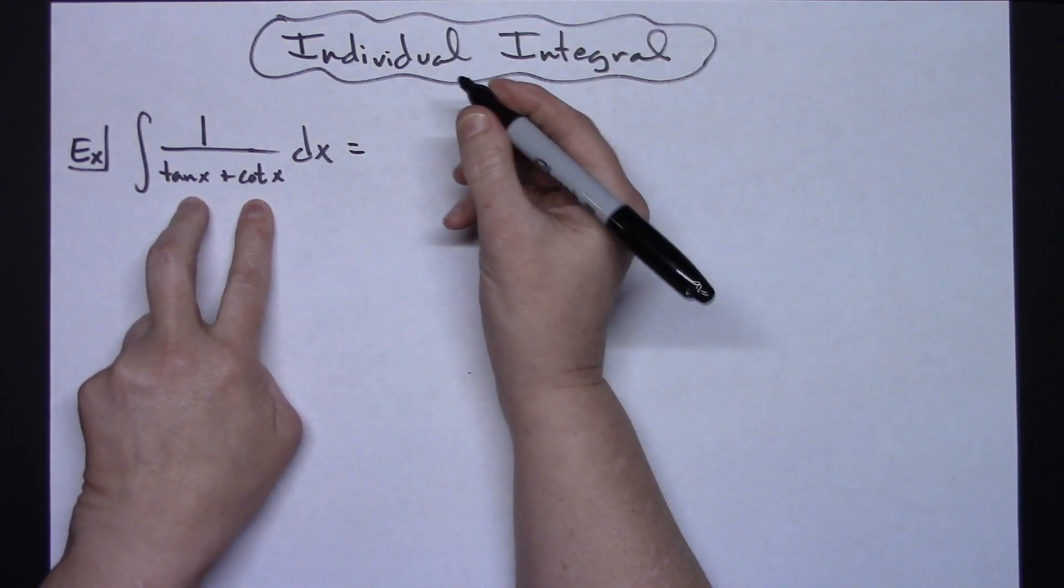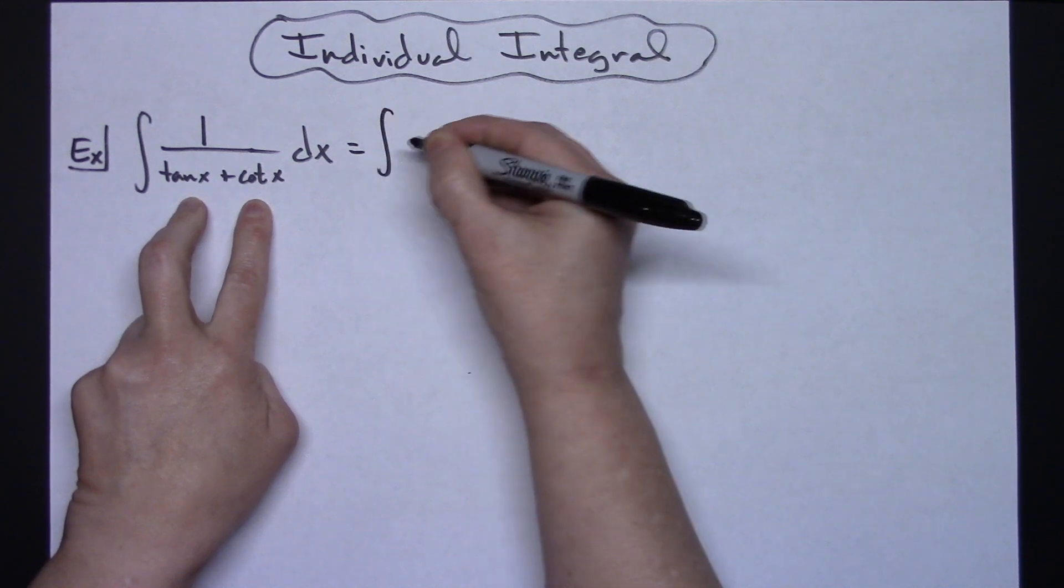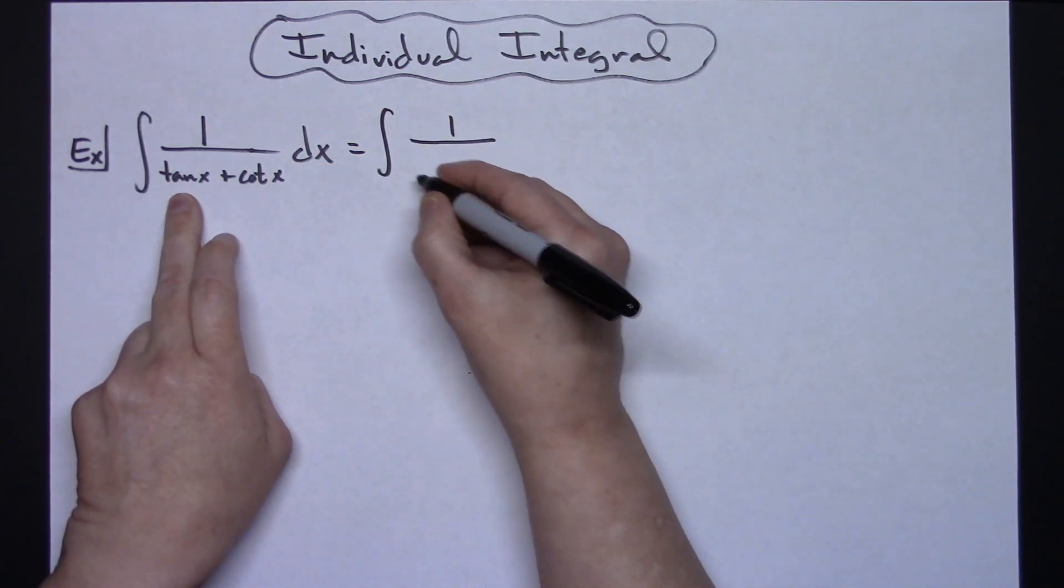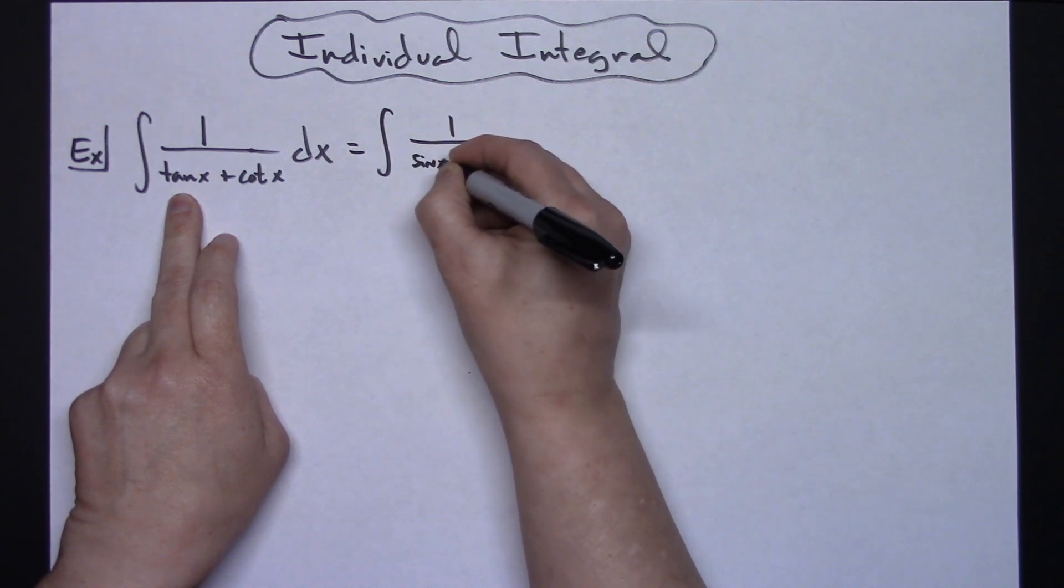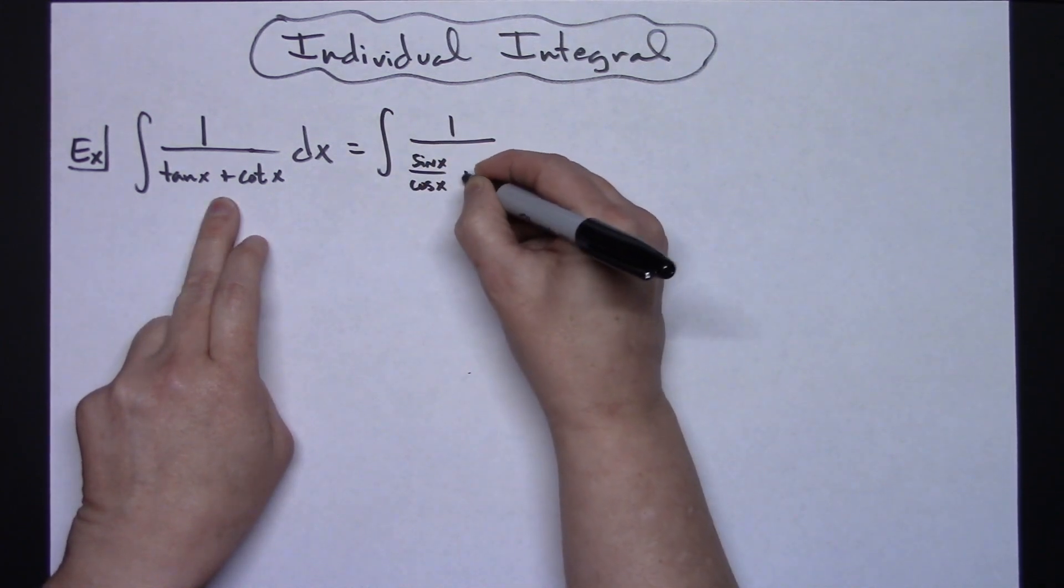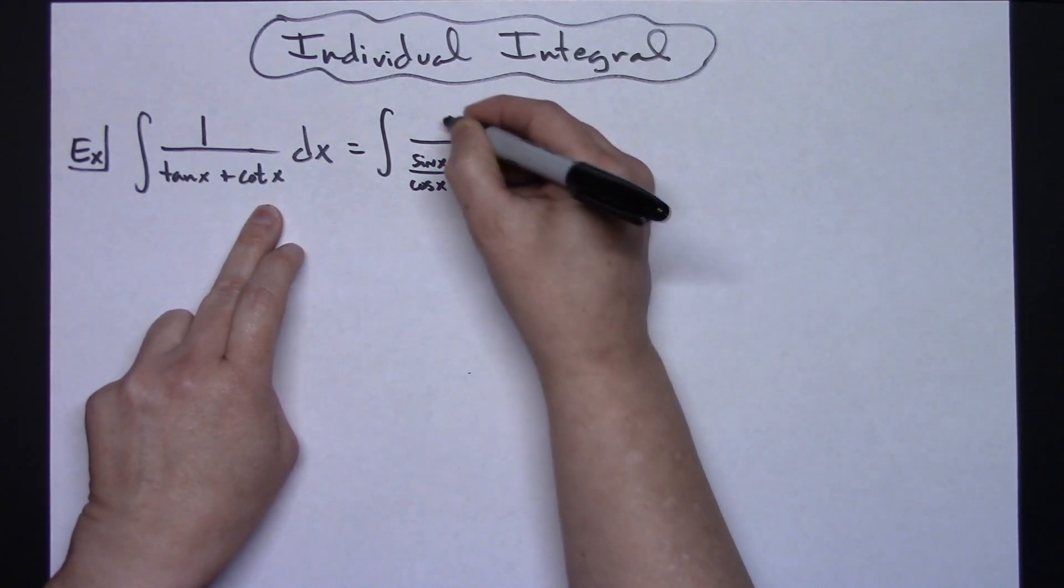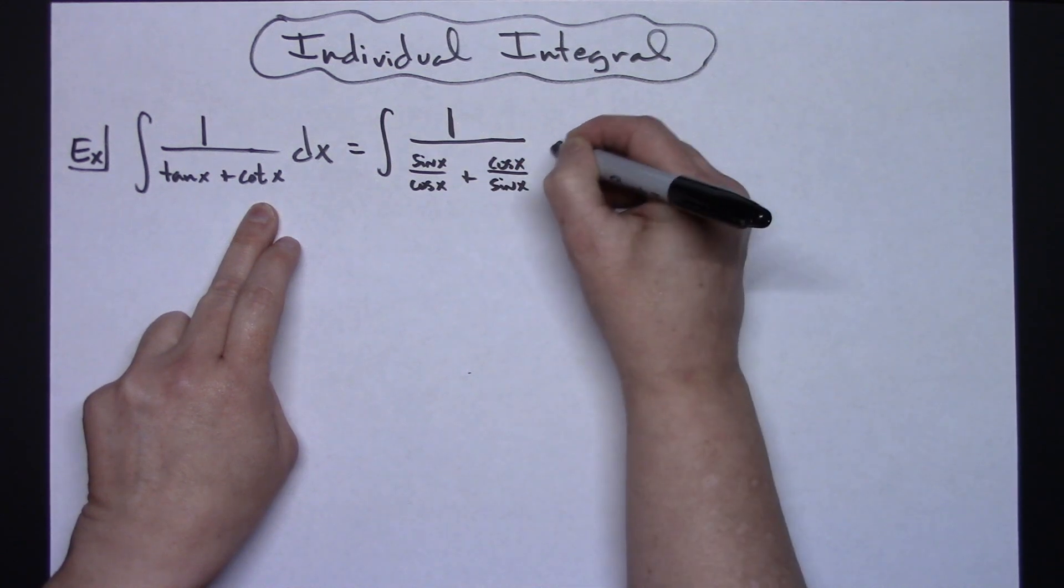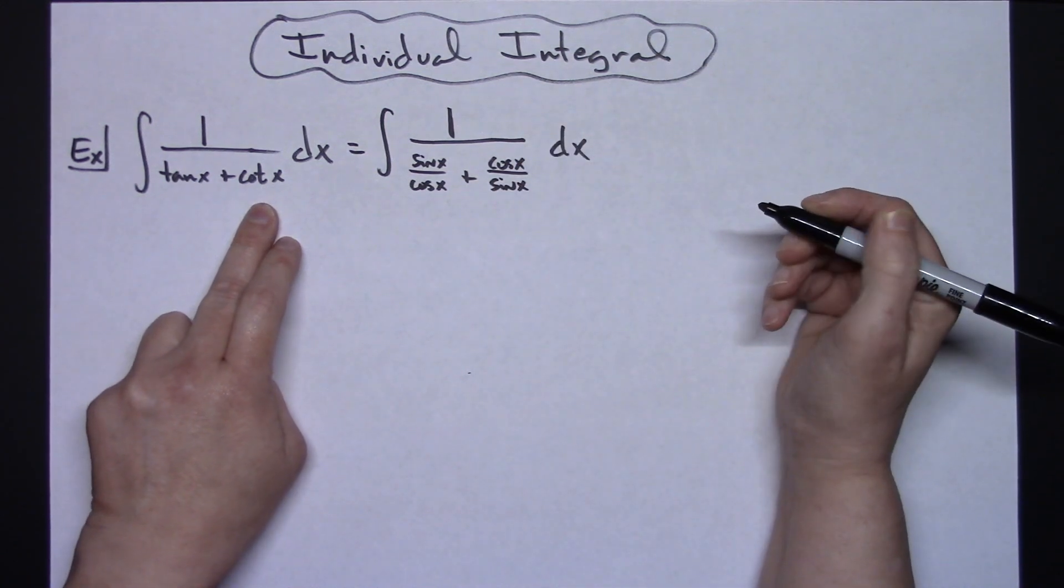So if I replace both of these with what they are equal to on those quotient identities I'm going to have a 1 over tangent is going to be sine x over cosine x and then we'll have plus since they are reciprocals of each other then that cotangent will be cosine x over sine x dx. So that's the first substitution I'm going to do.